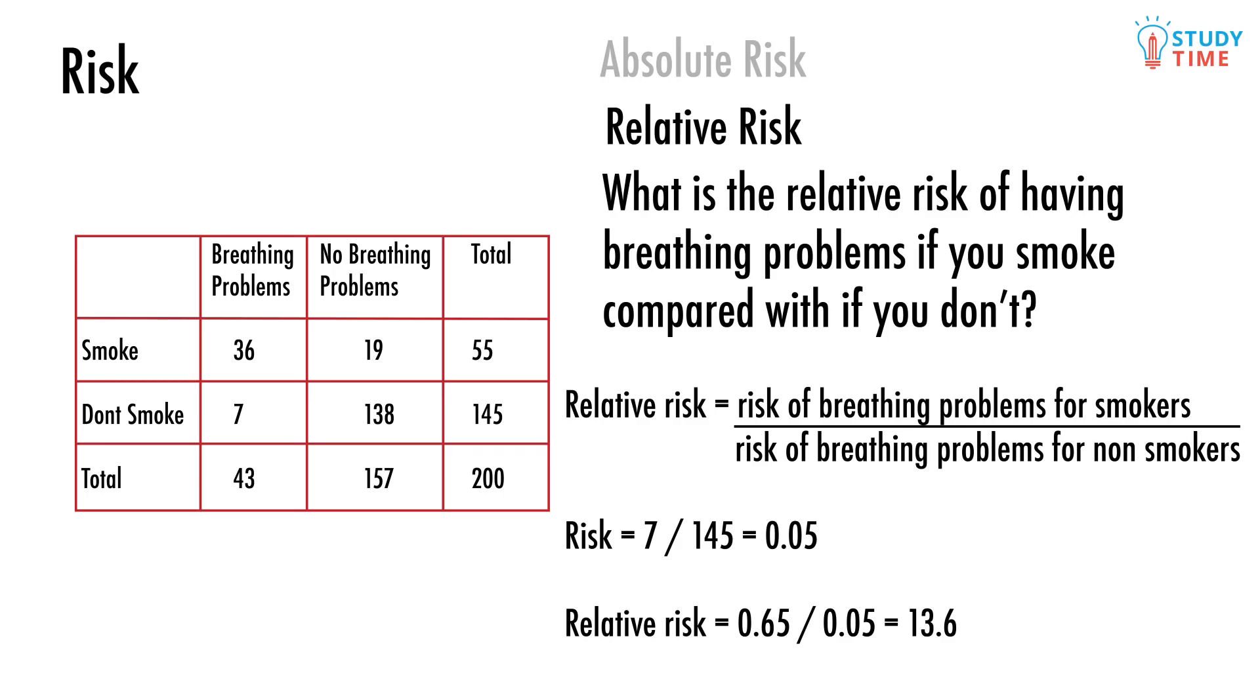Next, we'll quickly calculate the risk of getting breathing problems if you do not smoke. The risk equals 7 divided by 145 equals 0.05. Now we can go and determine the relative risk. The relative risk is going to be 0.65 divided by 0.05 equals 13.6. This means you're almost 13 and a half times more likely to run into breathing difficulties if you smoke.